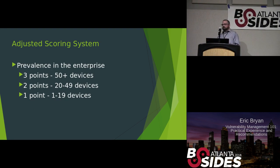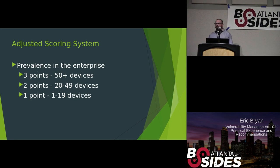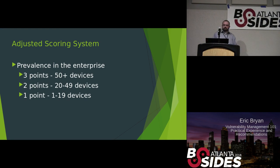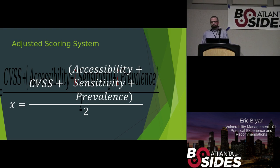Finally, we took into account prevalence in the enterprise. If you implement this elsewhere, you'd need to look at the size of your organization and adjust accordingly. We found an optimal scale for us was: 50 or more devices — three points; 20 to 49 — two points; less than 20 — one point. So by implementing our Adjusted Scoring System, we go from the complex CVSS calculation to something much simpler.